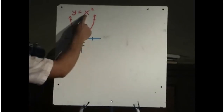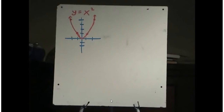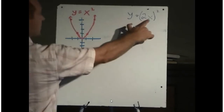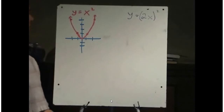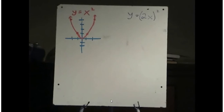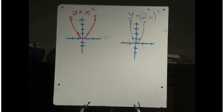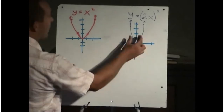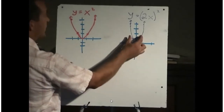Let's look at what would happen if we took the x value in this equation and replaced it with 2x. The equation would look like y equals 2x squared. If we enter this into our graphing calculator, this is what it looks like. Our graph appears to have gotten skinnier, or has been horizontally compressed.